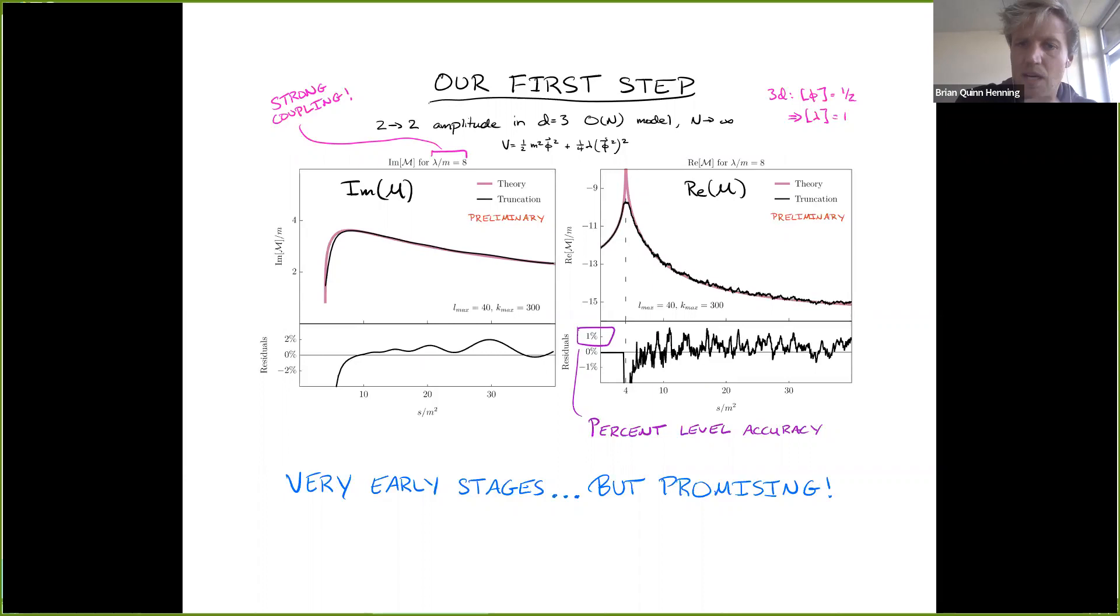So this is our first step at it. We're trying to compute amplitudes, full on amplitudes, and we've succeeded in some sense. What you're looking at here is a two to two amplitude in a strongly coupled model in three dimensions. So it's the O(N) model with scalars. These plots are at a dimensionless ratio lambda over M equals eight. It's large, so it's strong coupling. On the left is the imaginary and on the right is the real one. We get percent level accuracy and we haven't tried that hard.